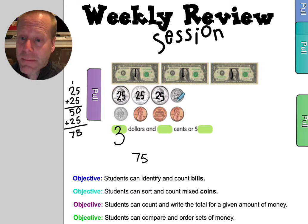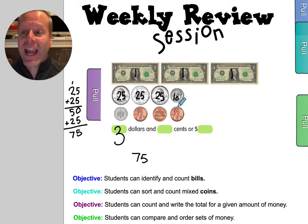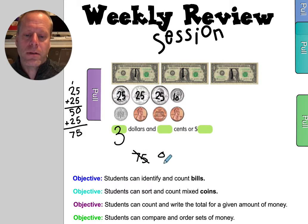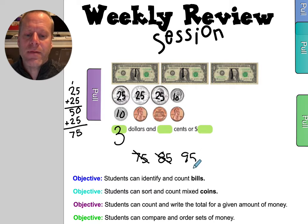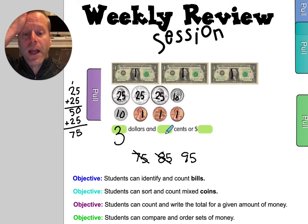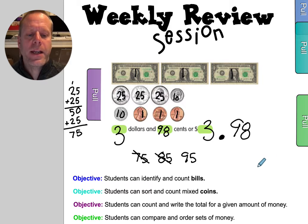Then I have a dime and I know that's worth 10 cents, so that's going to change the value I have here. I don't have seven tens anymore — now I have eight tens, so I have 85 cents now. Then I get another dime, so that's another change: 95 cents. Now I'm just going to hold that in my head and go 96, 97, 98. Almost $4 — I'm so close. $3 and 98 cents.